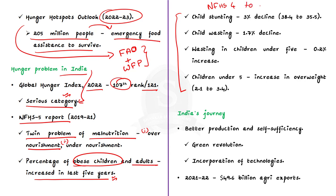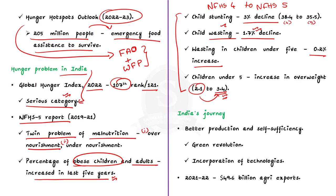There was only a 3 percentage point decline in child stunting — from 38.4% in NFHS-4 to 35.5% in NFHS-5. In the case of child wasting, there was only a 1.7% decline, while the percentage of children under 5 who are severely wasted actually increased by 0.2%. Children under 5 who are overweight increased from 2.1% in NFHS-4 to 3.4% in NFHS-5. So on one hand, overnutrition is increasing, while on the other, malnourishment is not getting a proper solution.